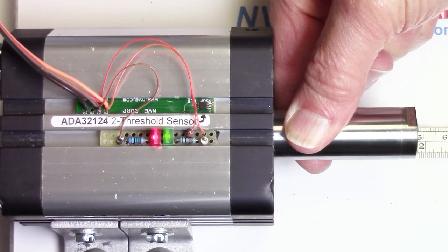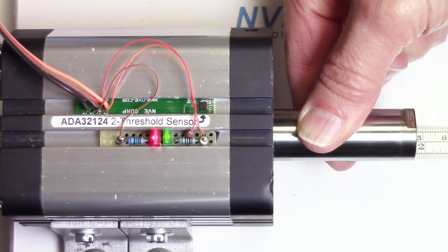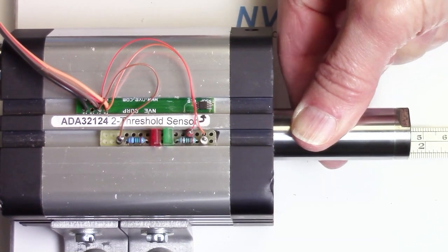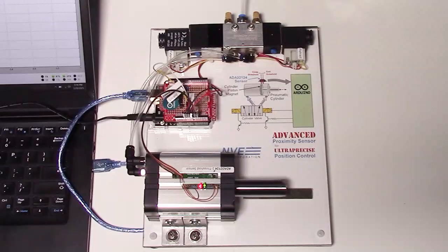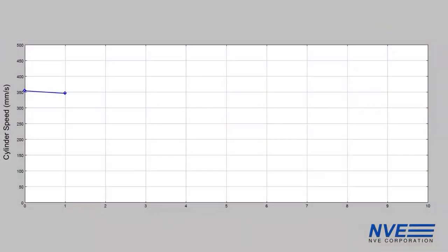It's about two millimeters between the thresholds. The sensor is connected to an Arduino. We measure the time between thresholds and calculate the velocity, which is sent to the laptop.